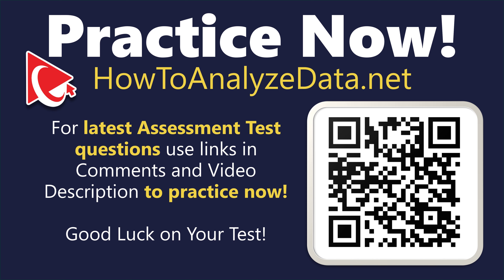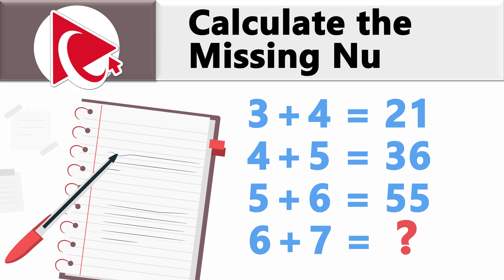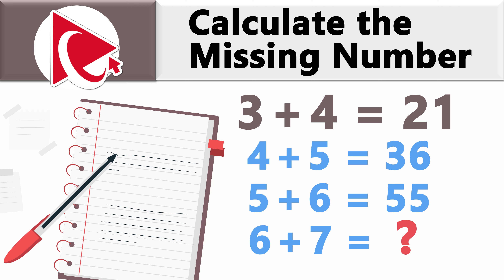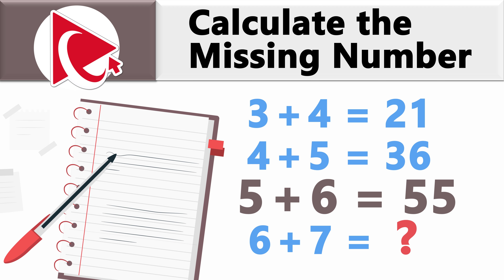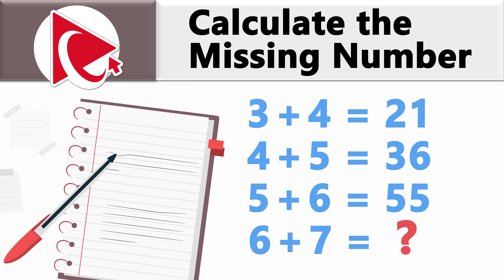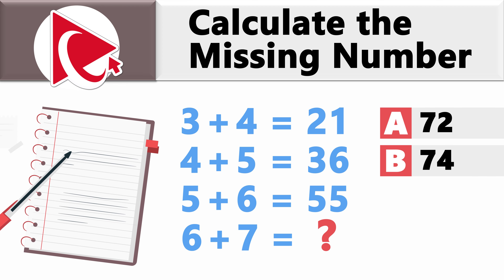Get ready to rock your brain muscles. This question is so challenging that even Siri asked for help. You are presented with a series of equations: 3 plus 4 equals 21, 4 plus 5 equals 36, 5 plus 6 equals 55, and then 6 plus 7 equals — and this is where you need to calculate the missing number. Select it from four choices: choice A is 72, choice B is 74, choice C is 76, and last but not least, choice D is 78.